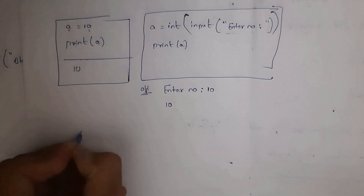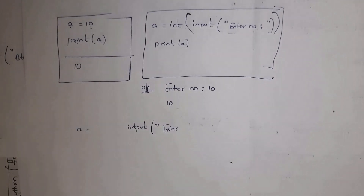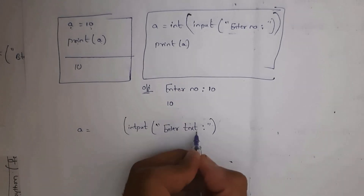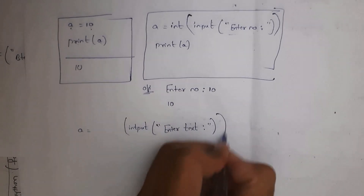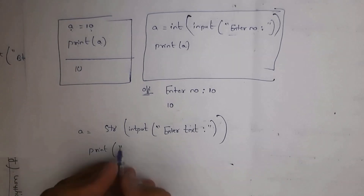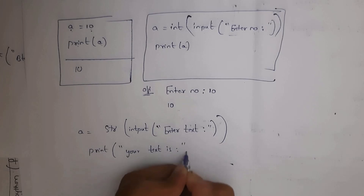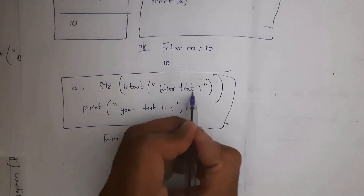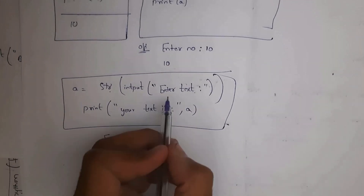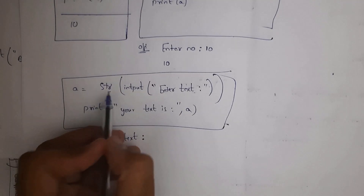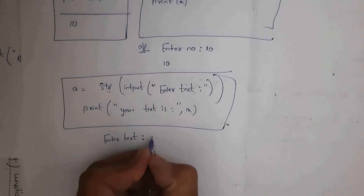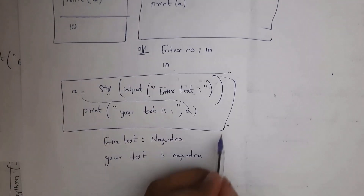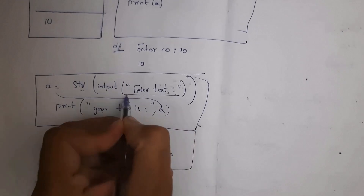In another example, a = str(input('Enter text:')) and print('Your text is:', a). When executed, it prompts 'Enter text:'. Since the data type is string, you can enter any string — for example, 'nagendra' — and you get output 'Your text is: nagendra'. It is not mandatory to include a prompt message inside the input function.